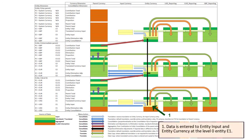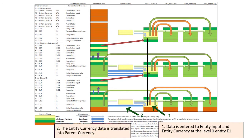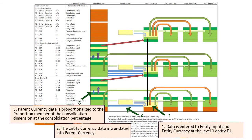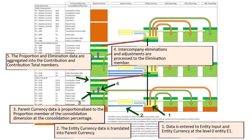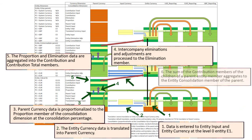For example, data is entered to entity input and entity currency at the level 0 entity E1. Then, the entity currency data is translated into parent currency. Parent currency data is proportionalized to the proportion member of the consolidation dimension at the consolidation percentage. Intercompany eliminations and adjustments are then processed to the elimination member. The proportion and elimination data are aggregated into the contribution and contribution total members.